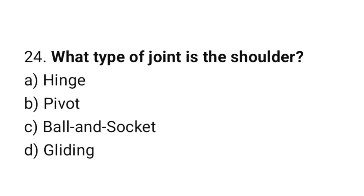Question number 24: What type of joint is the shoulder? The correct answer is C: Ball and socket.